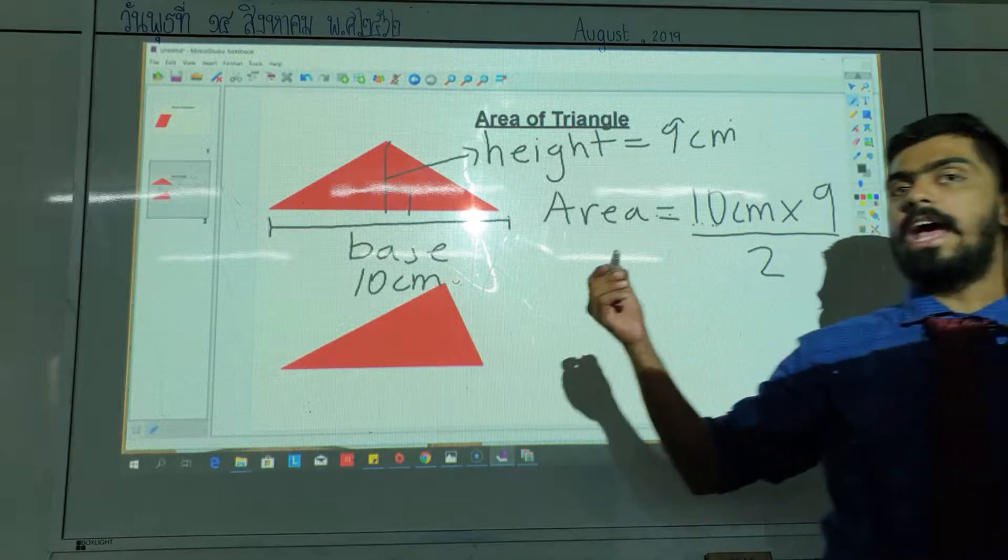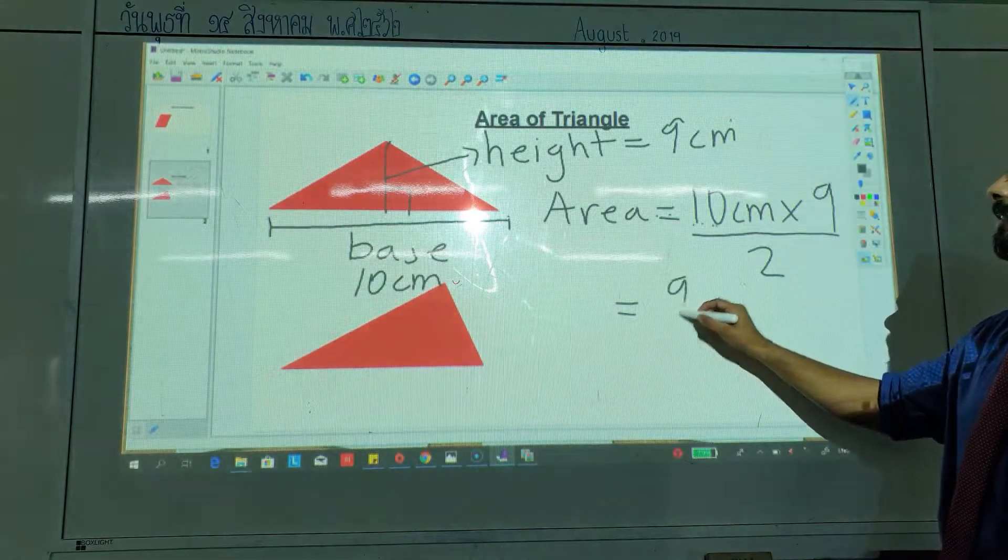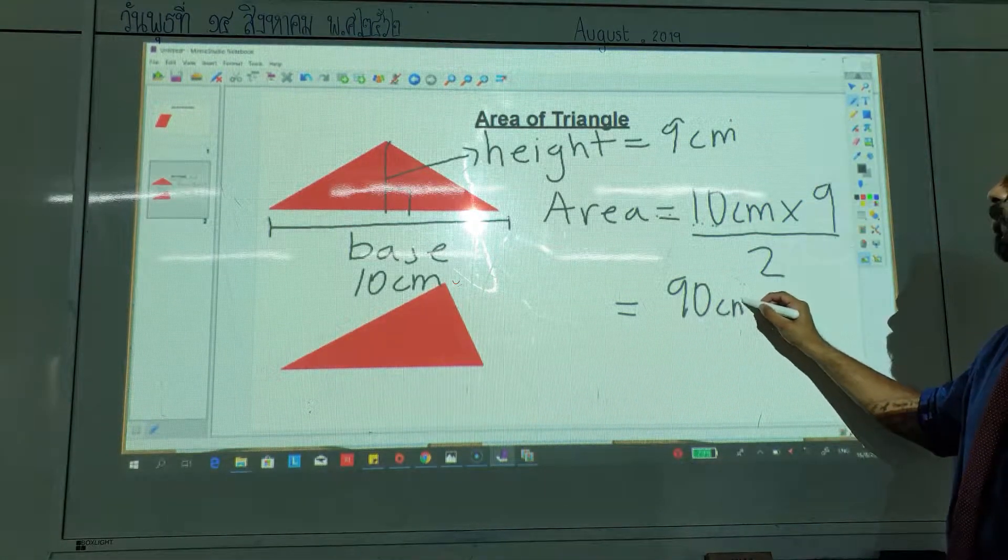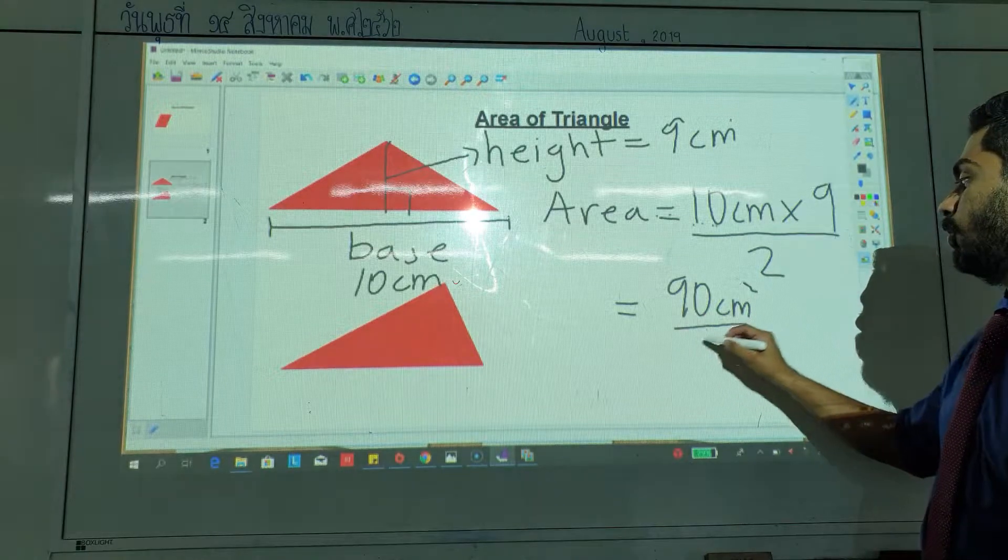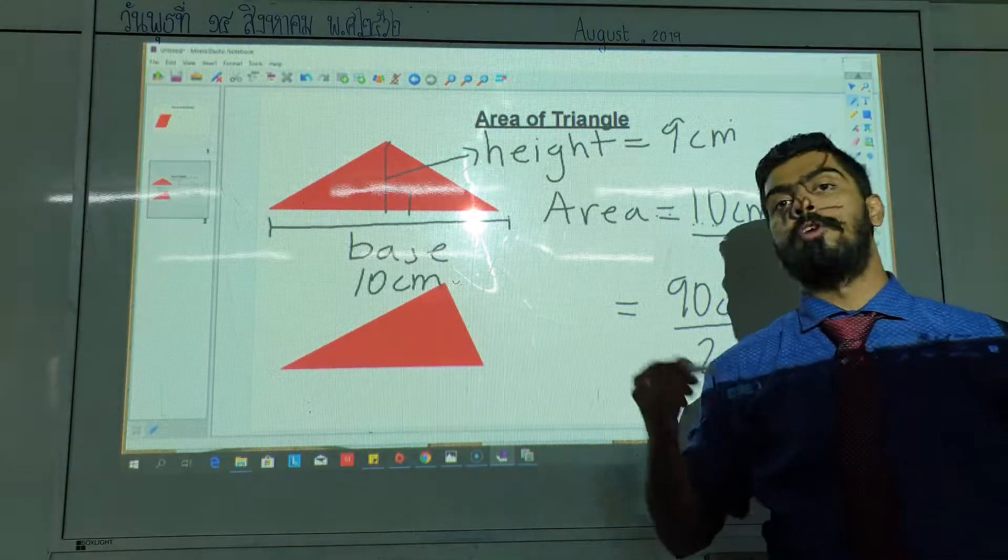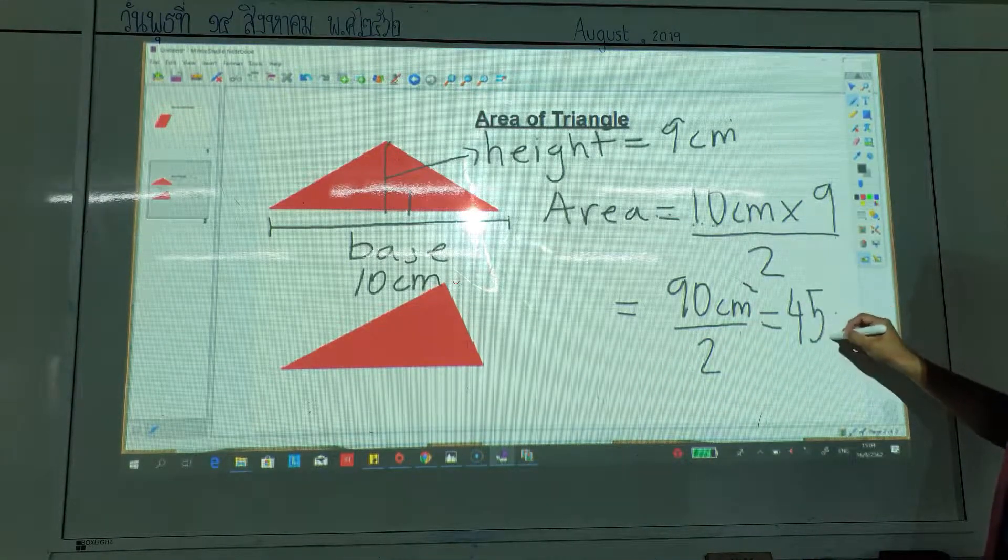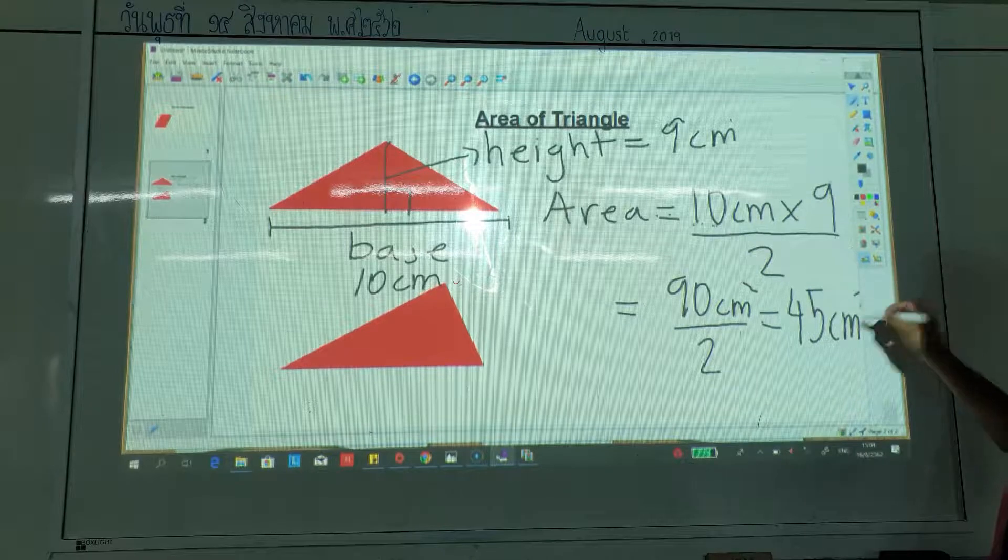Now, what is 10 multiplied by 9? Ninety. So we have 90 cm squared over 2. What is 90 divided by 2? 45. So the area of this triangle would be 45 square centimeters.